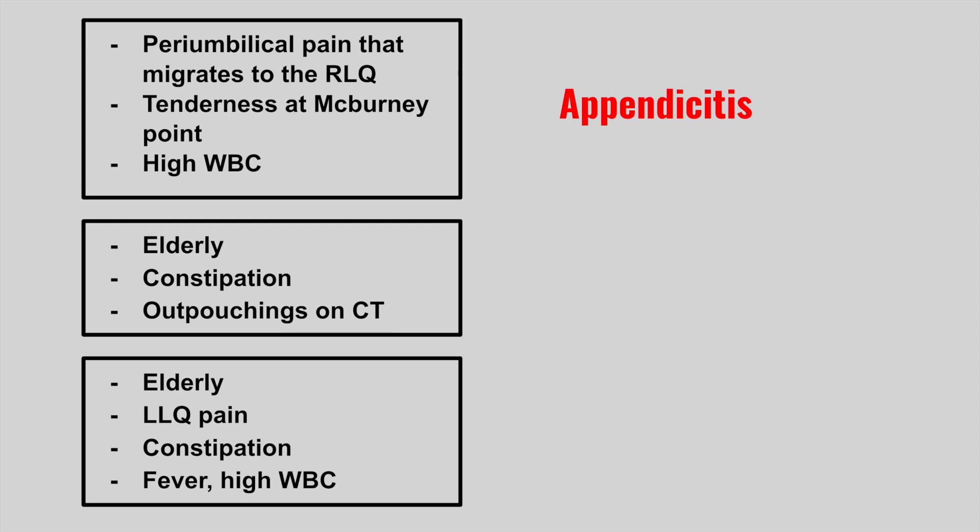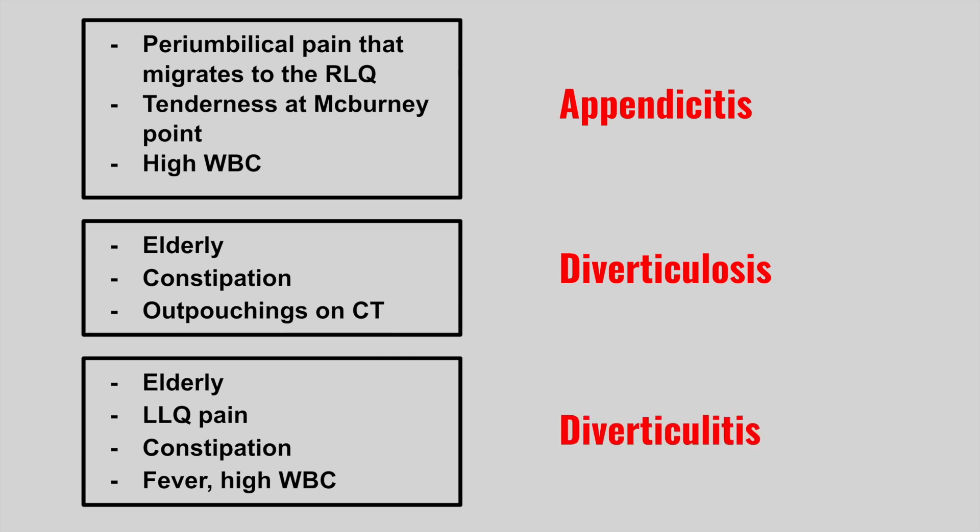The next patient is an elder with constipation and outpouchings on CT scan — this is diverticulosis. The next patient is very similar: an elder with a history of constipation who now develops left lower quadrant pain, a fever, and a high white blood cell count — this is diverticulitis.